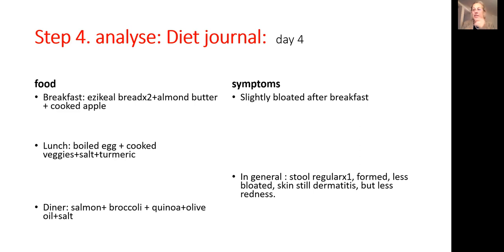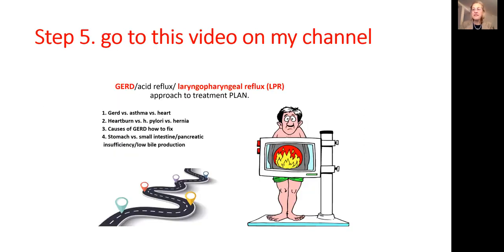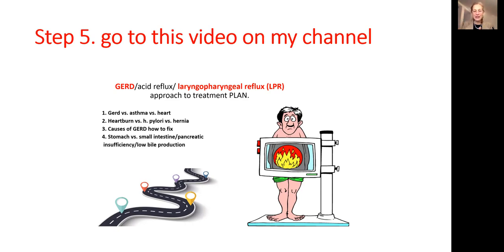Then what you do is go to step five and watch the video on my channel where I talk about the big-picture plan for diagnosing and treating acid reflux. You go straight to step three, where you identify whether you have normal or low acid production, and you do a test with baking soda.